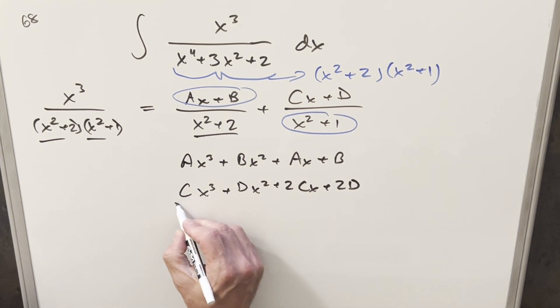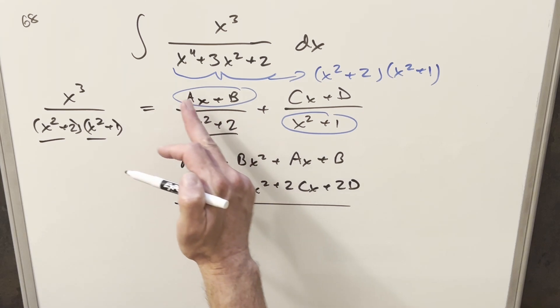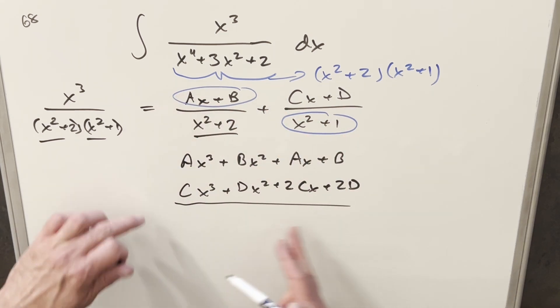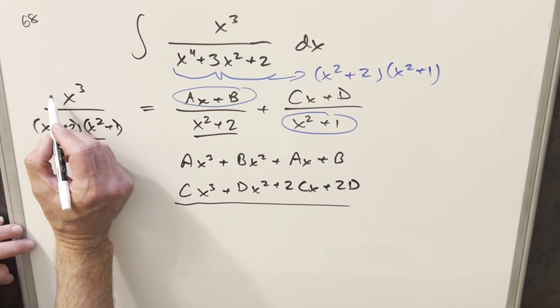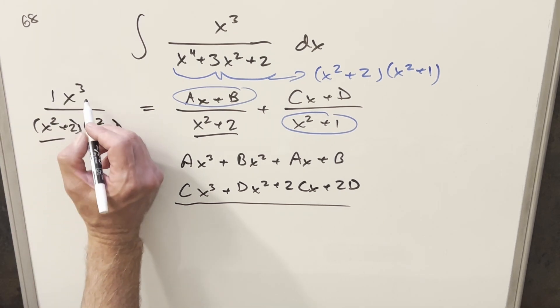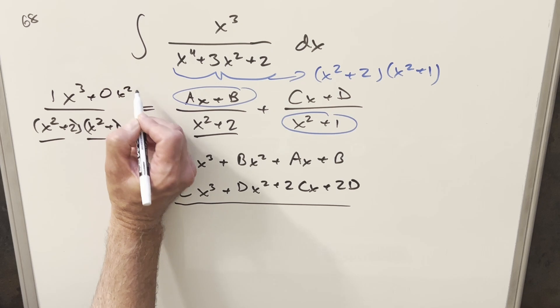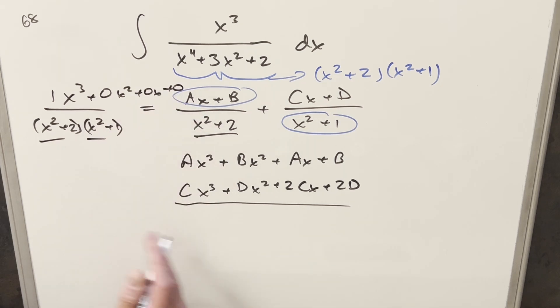And then let's think of this as adding together. After we get the common denominator, we're adding together the whole numerator. It's going to be adding all this stuff, but I've lined it up. And then what we have over here, you can think of this as a big polynomial. We can think of this as 1x cubed plus 0x squared plus 0x plus 0, and then match everything, match the coefficients here.